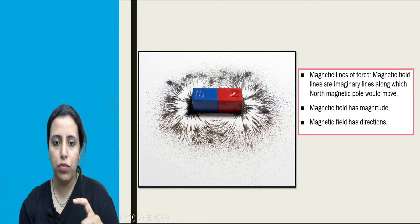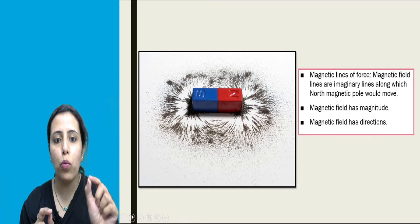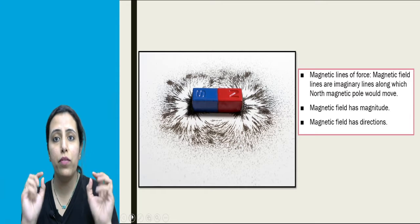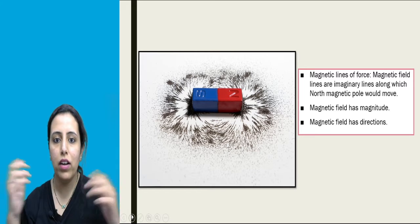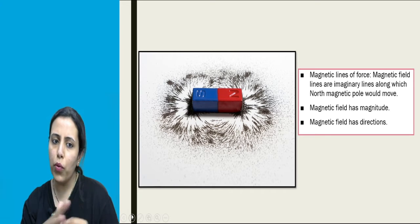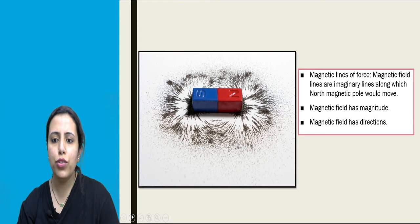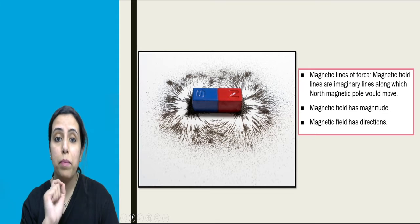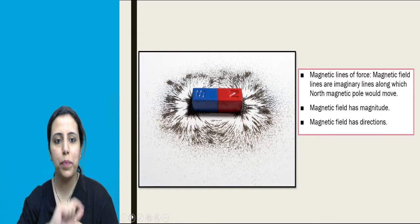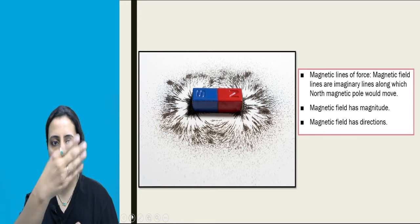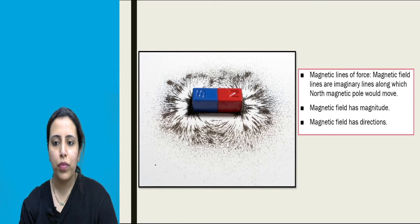If you can observe over here, they are in this coil format and they are dense at the poles, North and South poles. The quantity is dense and they are more accumulated. And as they go apart, the quantity becomes lesser.